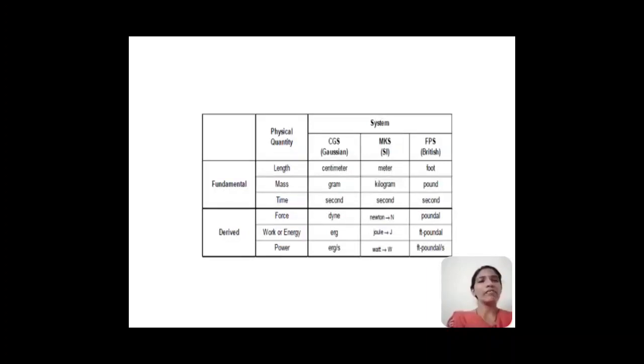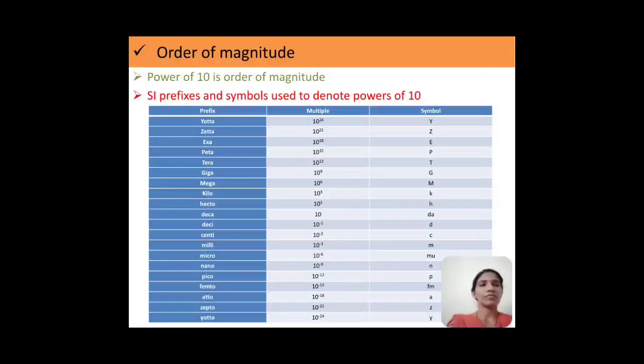Now we will move ahead with the derived quantity. One of them is force. For force, the CGS unit is dyne, MKS unit is newton, and in FPS it is pound. So please go through work or energy and power.